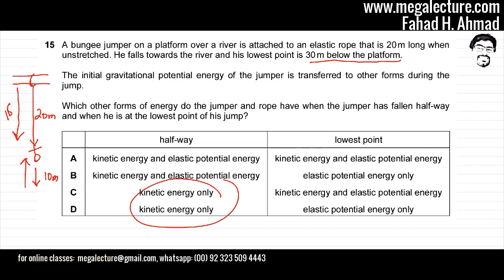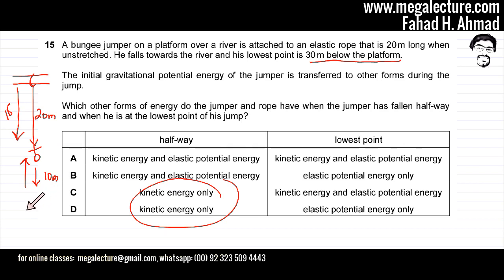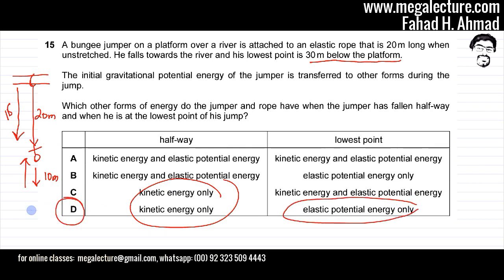At the bottom the bungee jumper is going to be completely stationary when he has fully stretched the bungee rope, and then he would start moving up again. But at the bottom the velocity would be exactly zero — so no kinetic energy. All of it would be converted into elastic potential energy. So D would be the correct answer for this question.